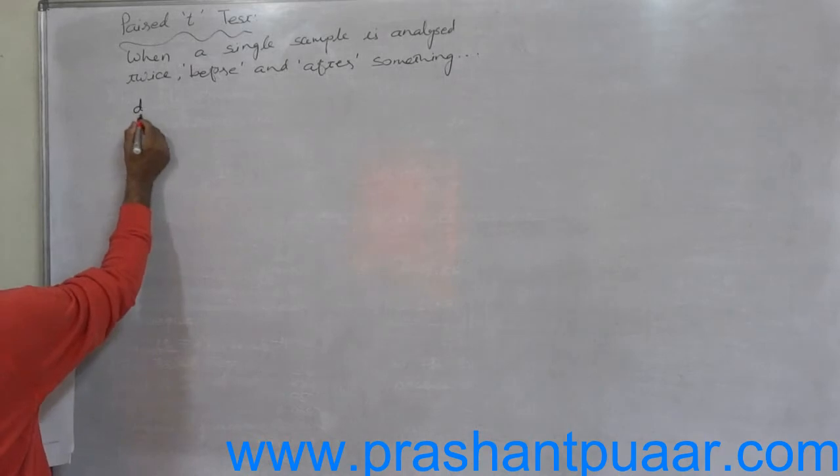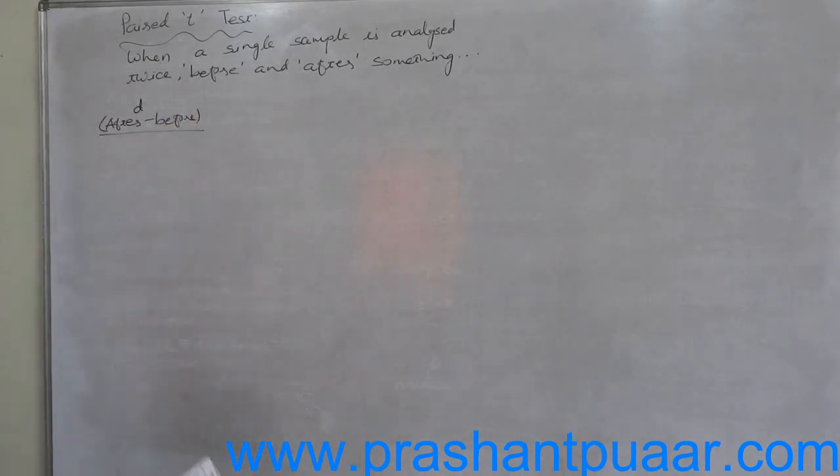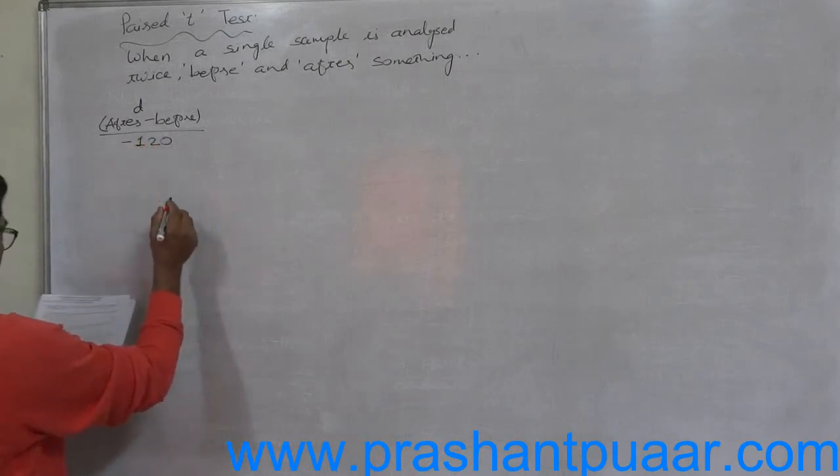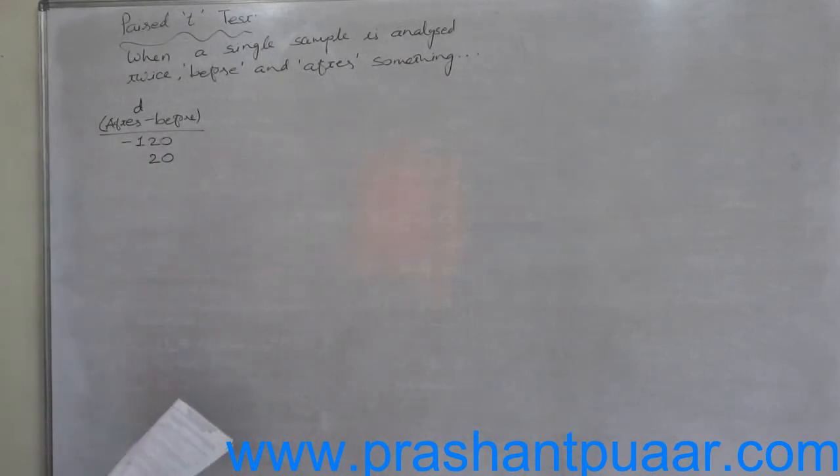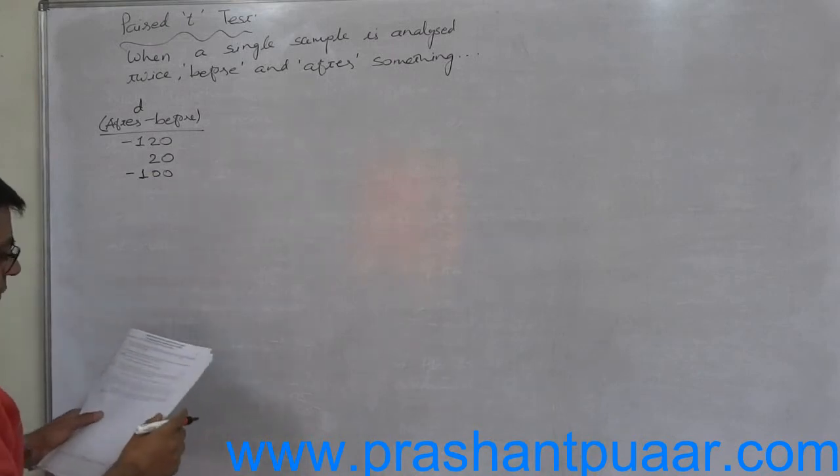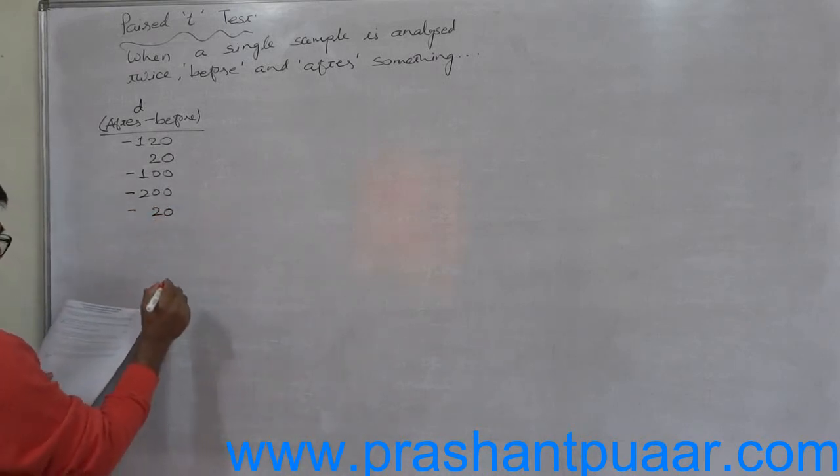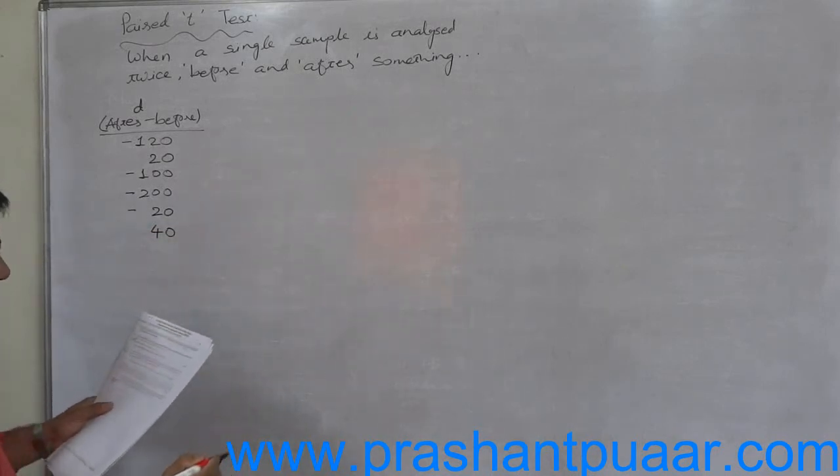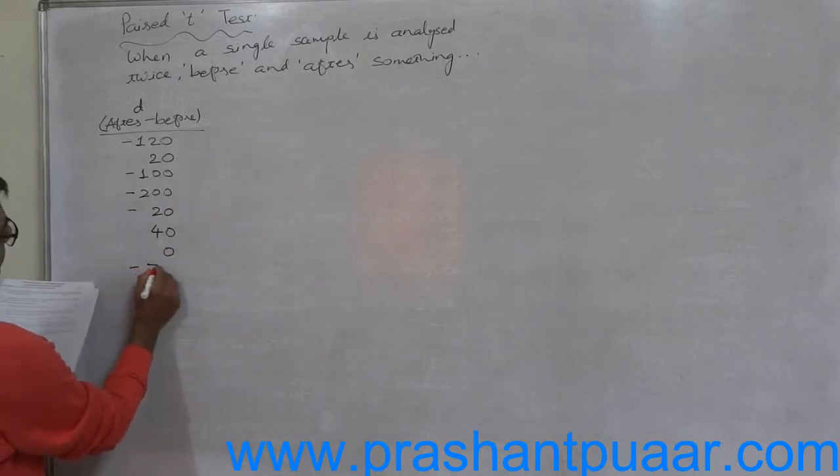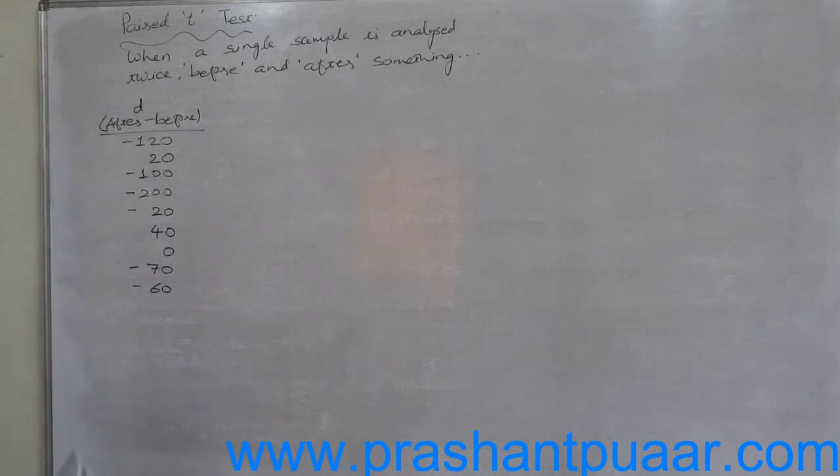d is after minus before. For department A, budgeted sales before is 1020, after is 900, so d equals minus 120. For B, it is positive 20 (870 minus 850). For C, it is 790 and 690, so minus 100. D is minus 200. E is minus 20. F is positive 40. G is 0 because budgeted and actual are both 540. H is minus 70. I is minus 60. J is minus 180.